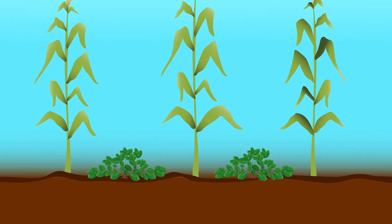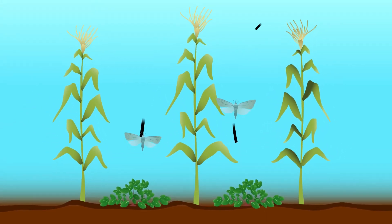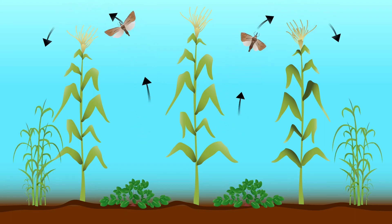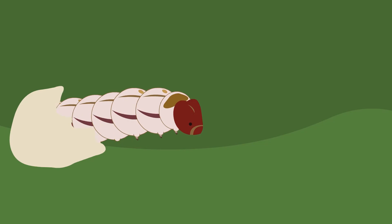By planting desmodium between your maize rows, you will push the stem borer away from your crop. By planting elephant grass or brachiaria around your field, you will pull the moth away from your maize and kill any potential offspring.